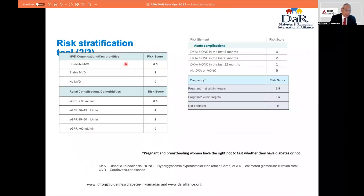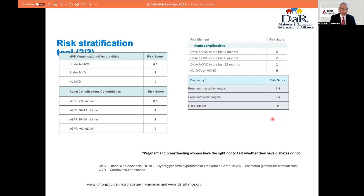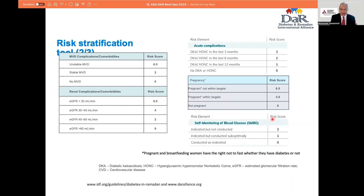Does the person have macrovascular disease, and if so, is it stable or unstable? Do they have renal impairment? Have they encountered recent or distant diabetic ketoacidosis or hyperosmolar state? For pregnancy, we advise any pregnant lady not to fast. The self-monitoring of blood glucose is an integral part of the risk calculation. If a person is taking insulin or sulfonylurea and they're not testing, that would add to their risk.